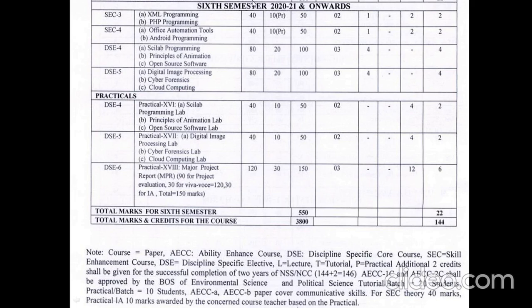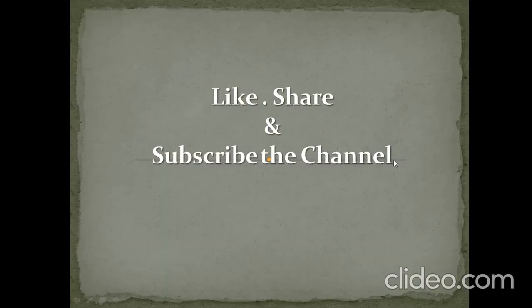The total marks and credits for the entire BCA course across all six semesters are 3800 marks of examinations conducted over three years, with total credits of 144. This covers all the details of the BCA course syllabus. Thank you for watching this video — please like, share, and subscribe.